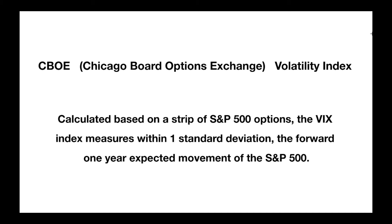This is one of the points I really want to hammer home, because 'fear index' gives people the wrong impression. It leads people to believe there is an inverse relationship — that if the S&P 500 is crashing the VIX spikes up, and if the S&P 500 is calm the VIX must be very low. But in actual fact, looking at the definition, there is no upward or downward bias anywhere. The VIX index is completely directionless — it is only measuring forward expected movement, plus or minus.